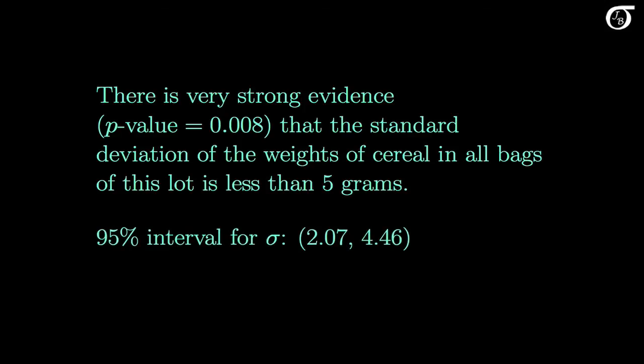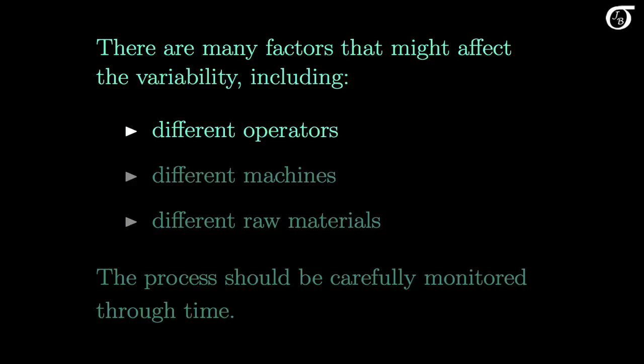We could also report the 95% confidence interval, showing our boss the range of plausible values for the standard deviation. Note that for this example there are many factors that might affect the variability — things like having different operators, different machines or wear and tear on one machine, different raw materials, and even changing temperature and humidity levels. If these factors are changing through time, that could very easily increase the overall variability. Looking at the variance for a single lot might not tell the whole story. The process should be carefully monitored through time, as quantities like the mean and variance may very well change through time. As with any statistical estimation, properly estimating the true variance can be a little tricky at times.